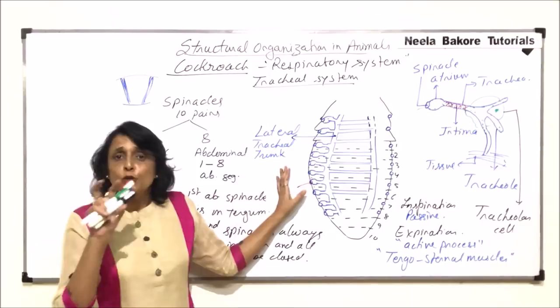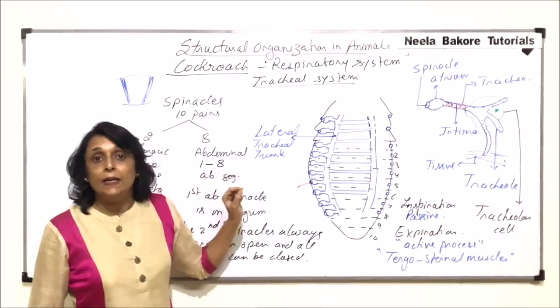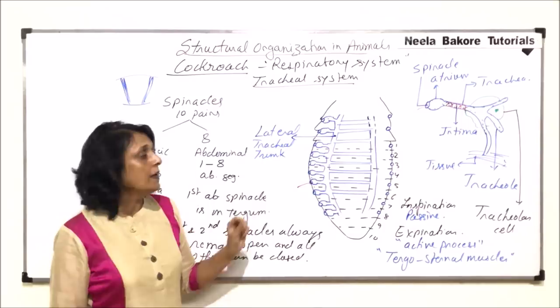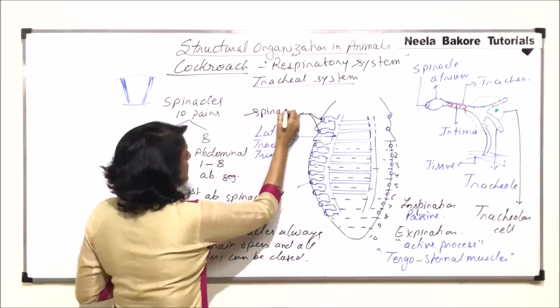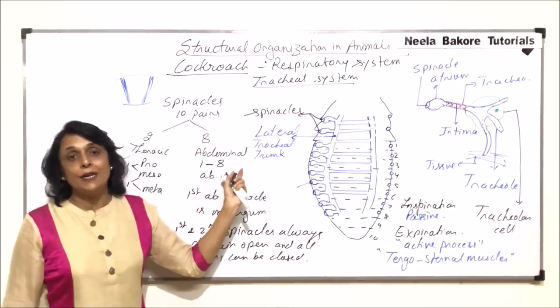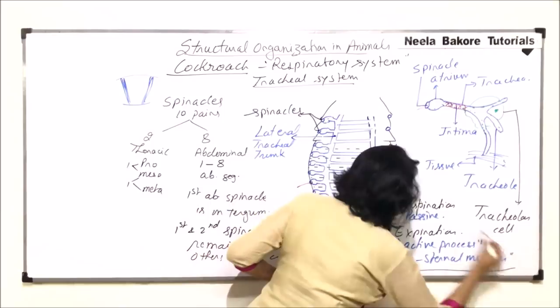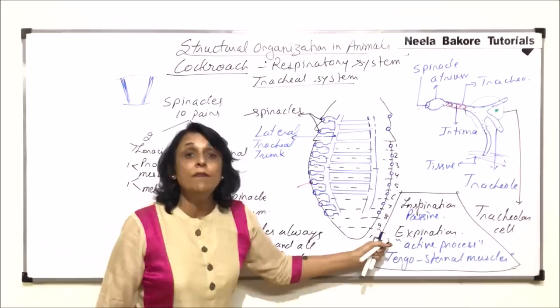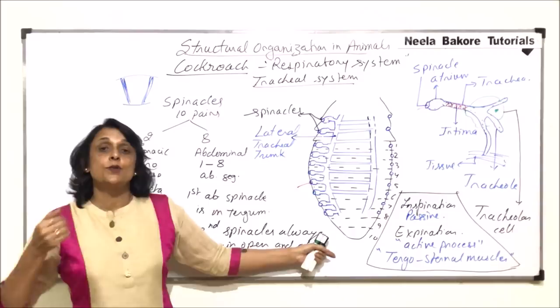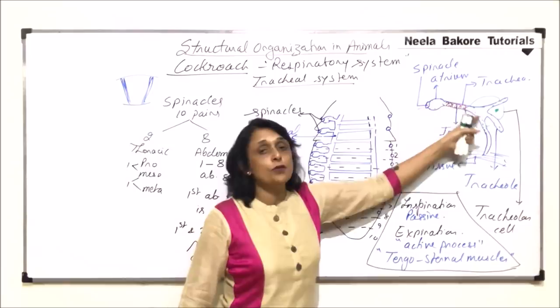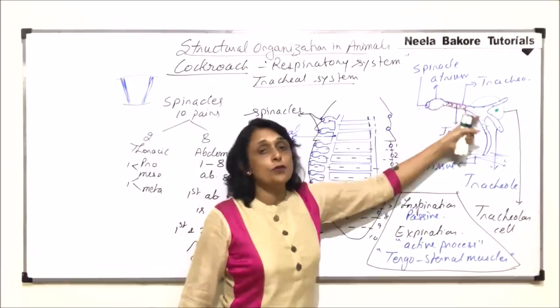Important things to remember: it is a tube-like system made up of chitinous tubes with a spiral thickening called intima that prevents collapsing. Openings are spiracles — 10 pairs total, 2 thoracic and 8 abdominal. In cockroaches, inhalation is passive and exhalation is active, performed with the help of tergosternal muscles. When moving, air reaches the tissue directly; when at rest, diffused oxygen reaches the tissue. This is how the tracheal system of cockroaches works.